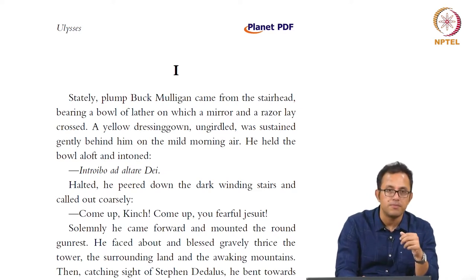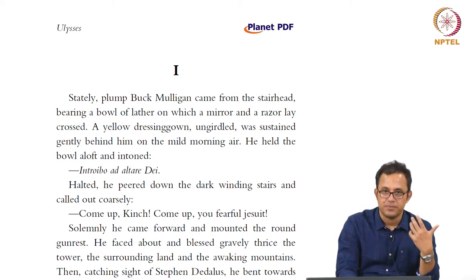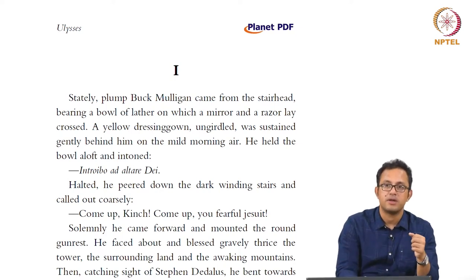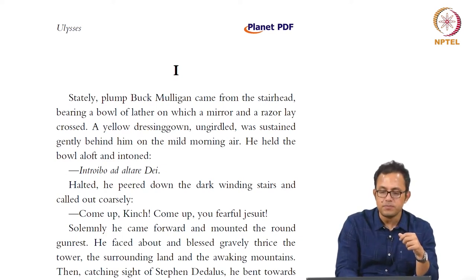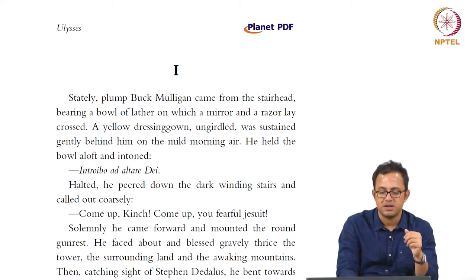For instance, Molly Bloom is a character who is often understudied in Ulysses. We will look at how Molly Bloom's dramatic interior monologue, with which Ulysses ends, actually foregrounds the female body and female sexuality in a way which is quite subversive in quality. But this is the beginning of the novel, which is set in a big tower — the Martello tower in Dublin, close to Dublin.